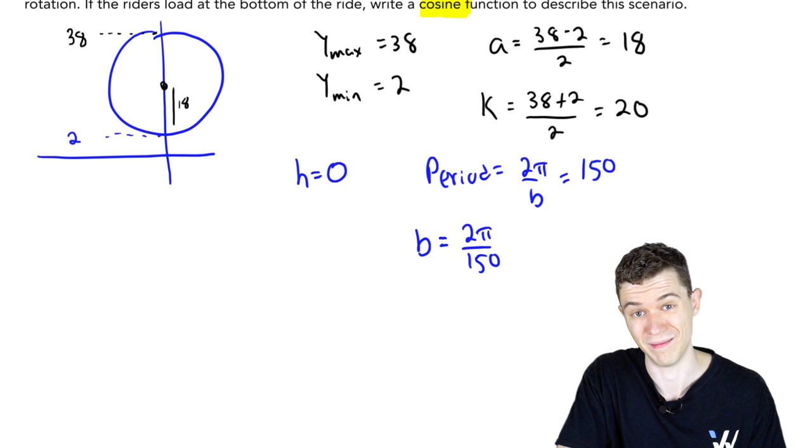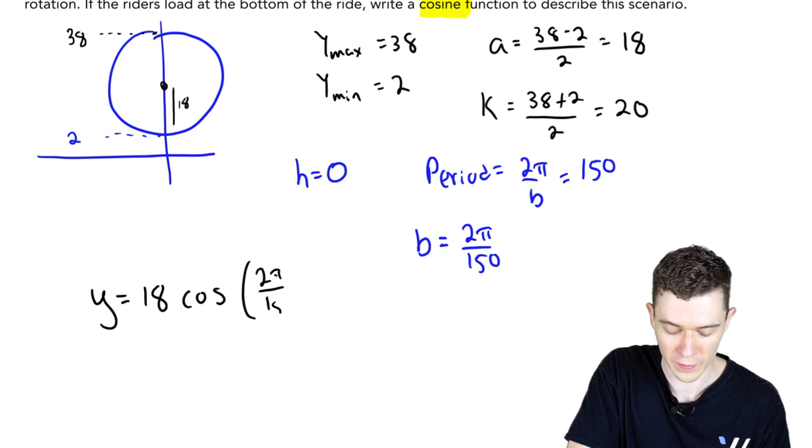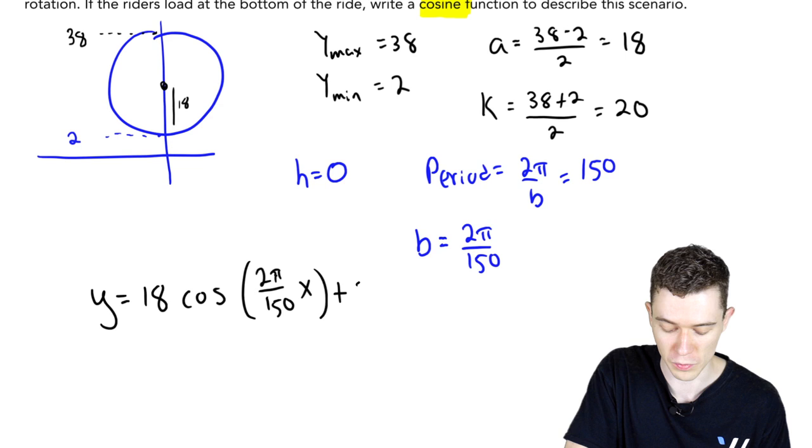Let's just put it in a cosine function. y equals a, cosine of b, 2 pi over 150. We'll just say x. You could use theta as well. Plus our k value, plus that vertical shift of 20. There is a nice cosine function to describe this situation. Here x is in seconds.